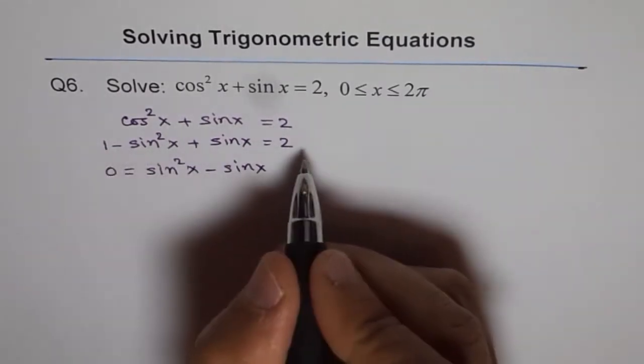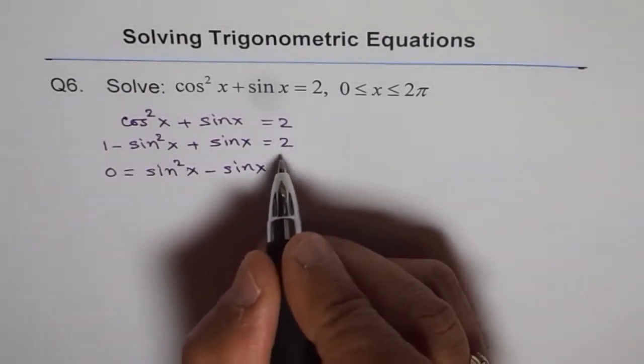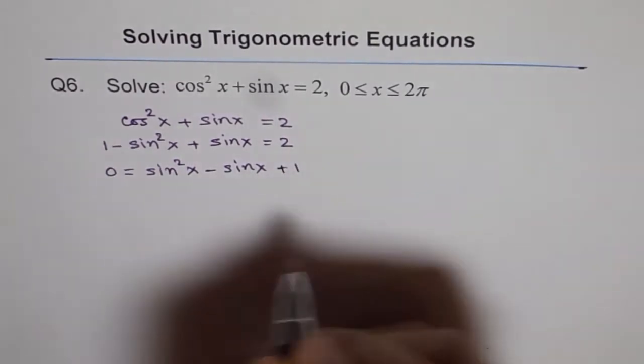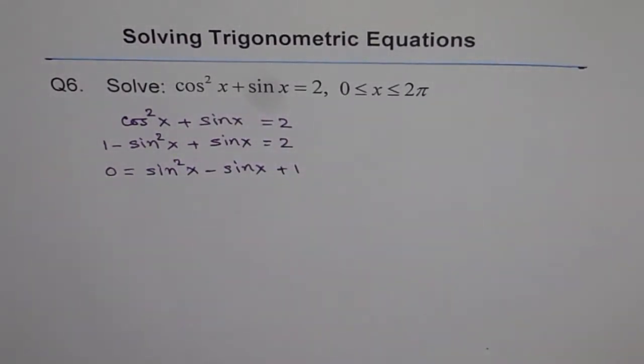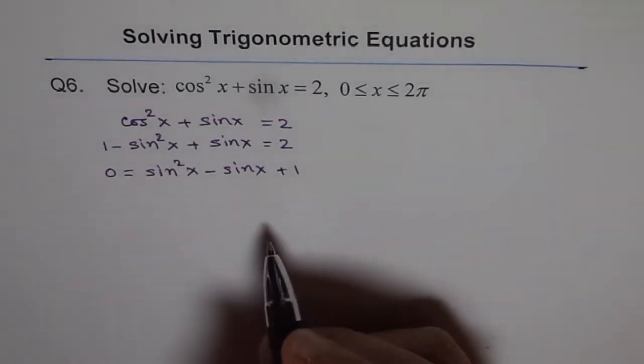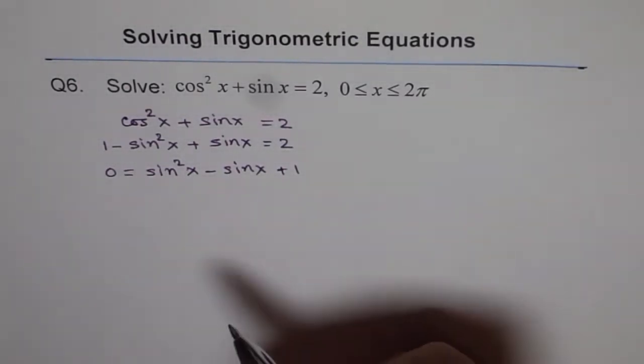When you take 1 on this side, it becomes 2 minus 1, which is 1, plus 1. This is a quadratic equation and we can always factor this or use the quadratic formula to find what sin x is.